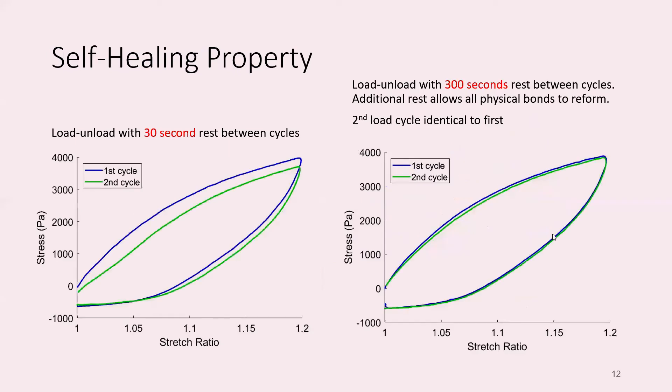Typical data: the stretch ratio is one plus the nominal strain. Each color represents a different rate of loading. As you would expect in any viscoelastic material, the faster you stretch it, the stiffer it behaves. When you unload, it has quite a bit of hysteresis. The gel has a certain degree of self-healing. If you load and unload with a short rest in between, the second loading cycle has lower stress than the first. But if you wait five minutes, it will completely recover. All the bonds that had broken during the test are able to reform and the material is basically good as new.